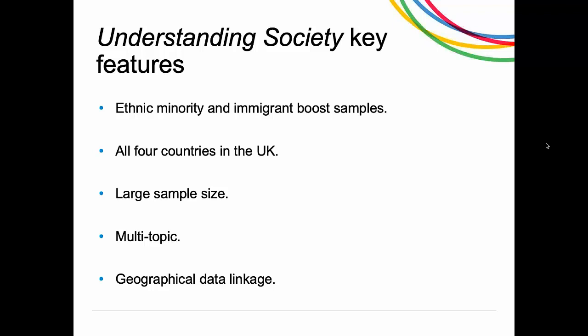Fourth, it's multi-topic — not just a political science study. It covers income, jobs, health, family structure, environmental behaviours, and epidemiological information. We have biomarker data, health measures, and genetics data collected in wave two. It's a broad study with lots of information rather than a specialized election study. Fifth, there are various levels of geographical data linkage, so if you're interested in politics you can easily link to constituency information — for instance, comparing people in marginal constituencies to those in safe seats.